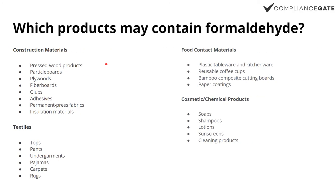Now, which products may contain formaldehyde? The main discussion when it comes to formaldehyde is compressed wooden products — plywood, fiberboard, particle boards and so on.